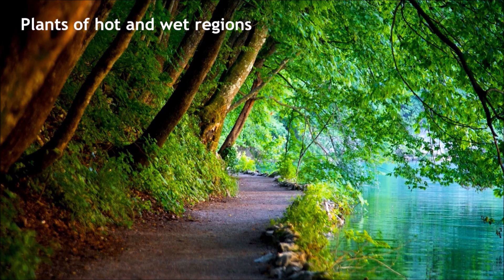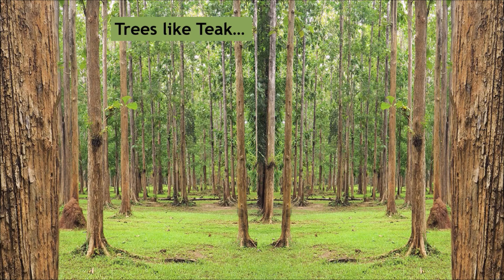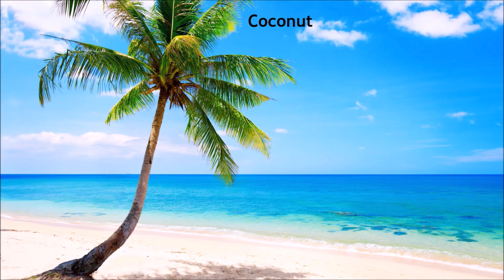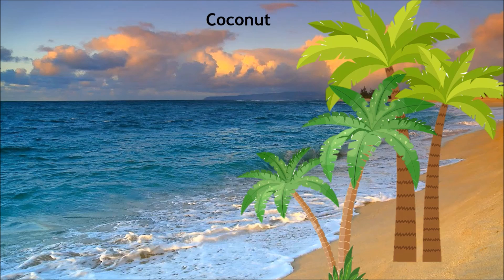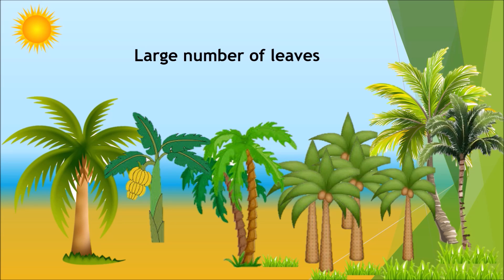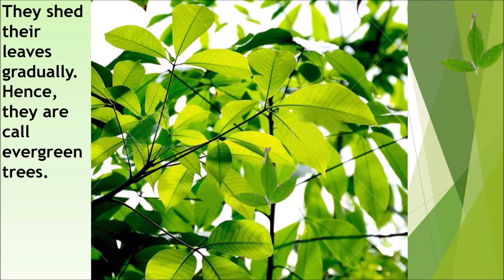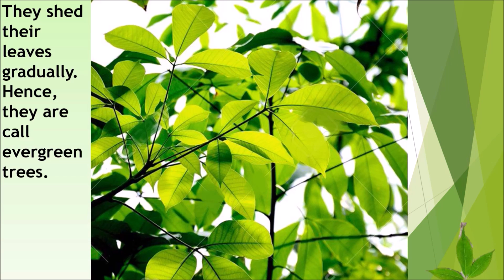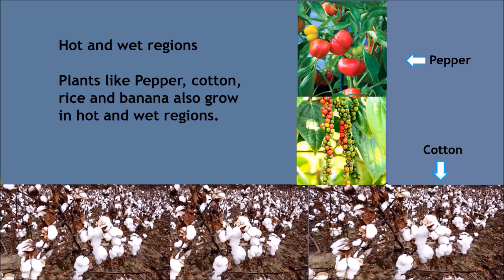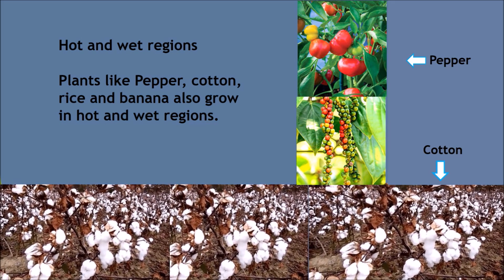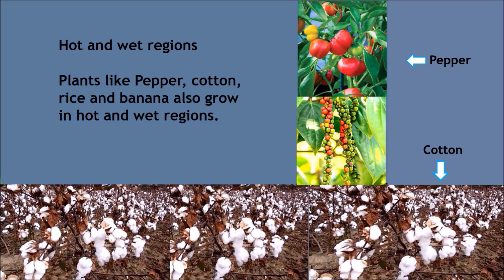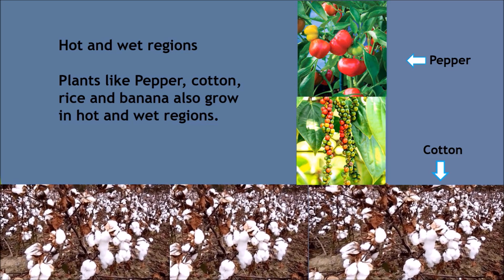Plants of hot and wet regions: Trees like teak, rubber and coconut are found in hot and wet regions. These generally have a large number of leaves. They shed their leaves gradually, hence they are called evergreen trees. Plants like pepper, cotton, rice and banana also grow in hot and wet regions.